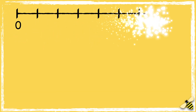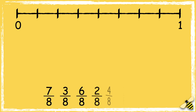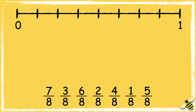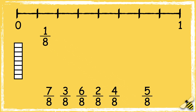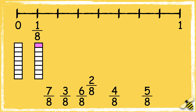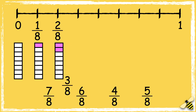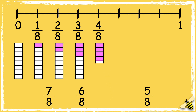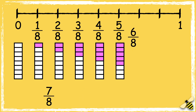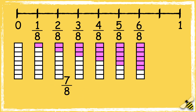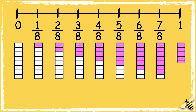Here's another number line. This time, the number line is going up in eighths. So let's put these fractions in order from smallest to largest. Starting with 0 eighths, or 0: 1 eighth, 2 eighths, 3 eighths, 4 eighths, 5 eighths, 6 eighths, 7 eighths, and 8 eighths.